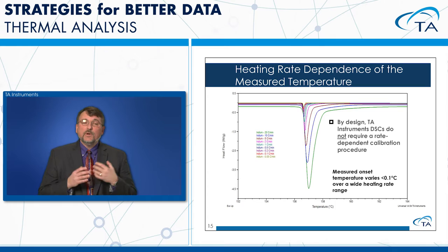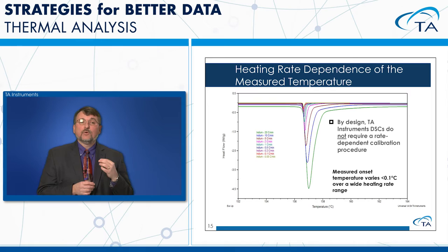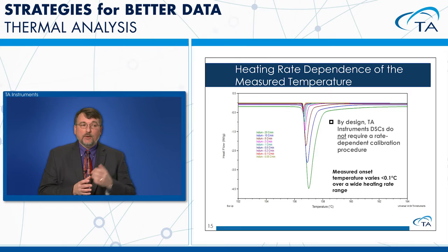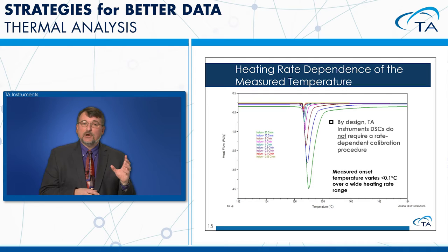In our DSC cells, rate-dependent calibration is not necessary. By design, TA Instruments DSCs do not require a rate-dependent calibration procedure. Here's data where we ran indium from 0.05 to 20 degrees per minute. Plotting all nine runs, the melting onset varies by only 0.1°C over that wide range of heating rates — a very small change, confirming no need to change calibration for different heating rates.